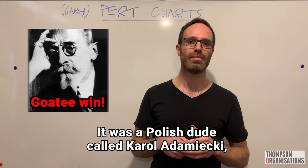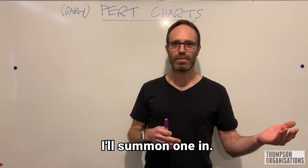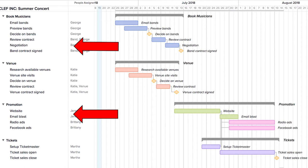Now Gantt charts, we've all seen them. I'll summon one in. We have along the top here, we have the dates, we have down here on the vertical axis, we've got the actual tasks that need to be done, and the bars represent when the work's actually occurring.